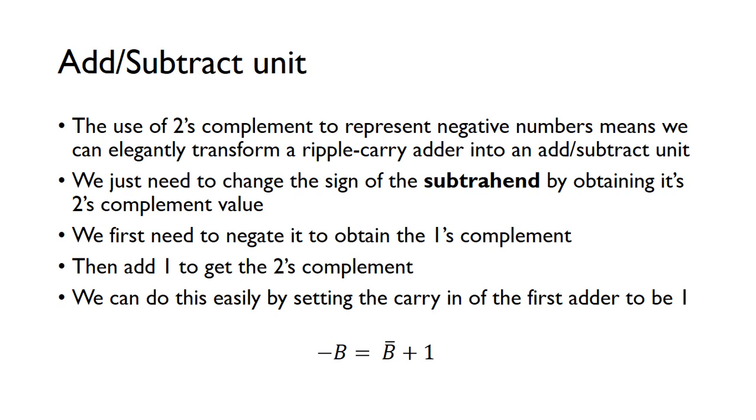So the fact that we can use 2's complement to represent negative numbers means that we can elegantly transform a ripple carry adder into an add-subtract unit. So to turn it to a subtract unit, we just need to change the sign of the subtrahend by obtaining its 2's complement. So we do that by negating the value to get its 1's complement and then add 1 onto it to get its 2's complement. So minus B, we know in 2's complement is given by not B plus 1. So you can see we need to generate this extra 1 here and we can actually do that very easily by just setting the carry bit of the first adder to be 1.